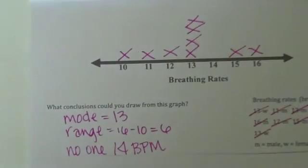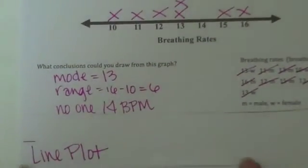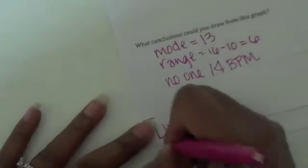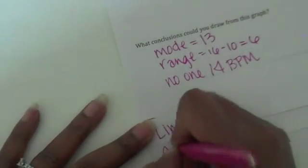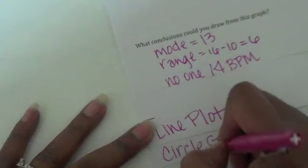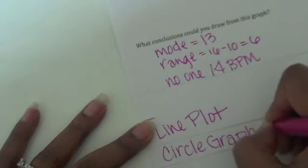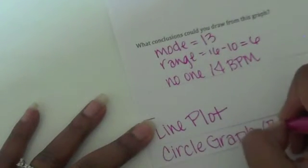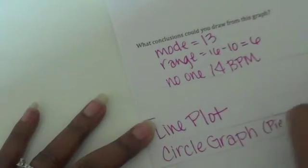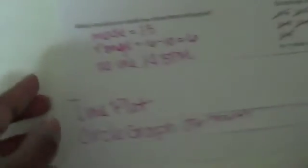You're plotting things on a number line with the line plot. The next type of graph we're going to discuss is a circle graph — some of you also refer to this as a pie chart, and that's okay. Either way, circle graph or pie chart works.